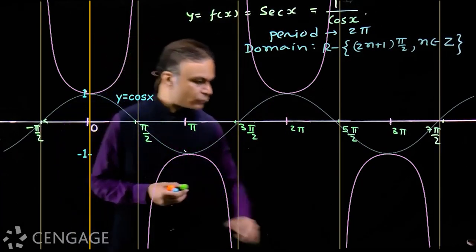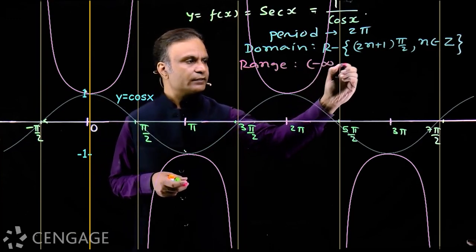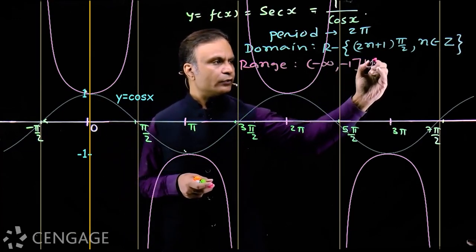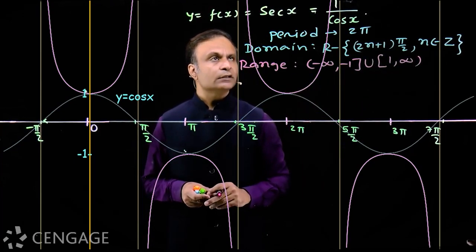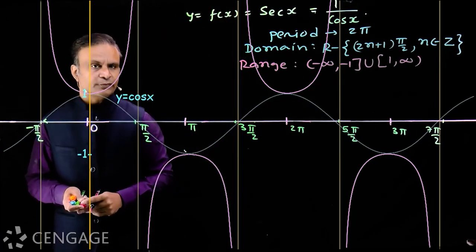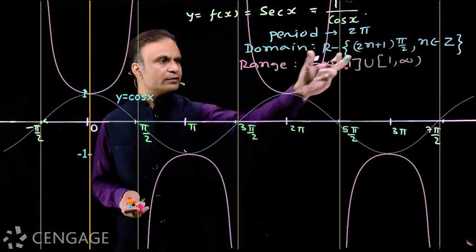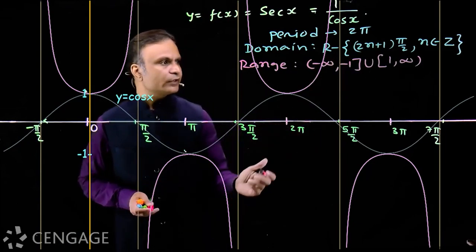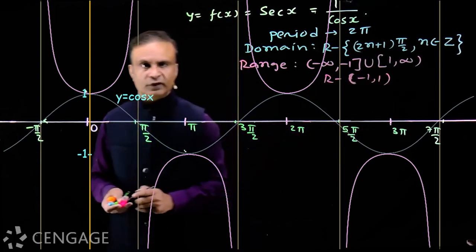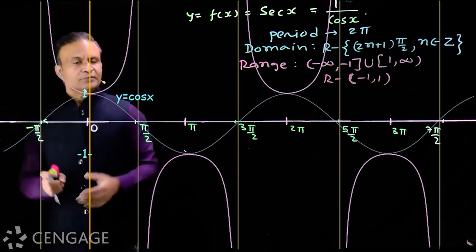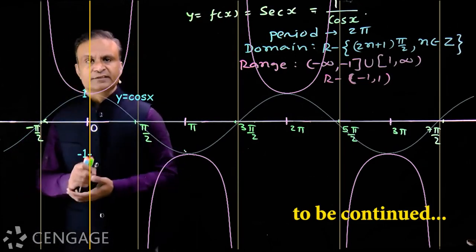The range of sec(x) is (-∞, -1] ∪ [1, +∞). This range is the same as that of cos(x) in the sense that sin(x) and cosec(x) share their range similarly. Equivalently, the range excludes the open interval (-1, 1). So we have: period 2π, domain all reals excluding odd multiples of π/2, and range (-∞, -1] ∪ [1, +∞). This is how we draw the graph of sec(x) from the graph of cos(x).